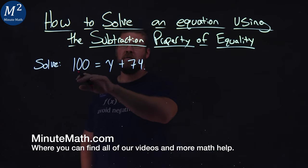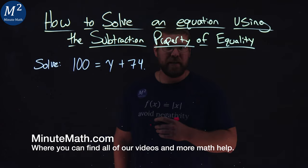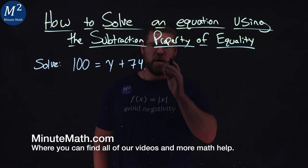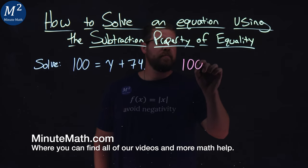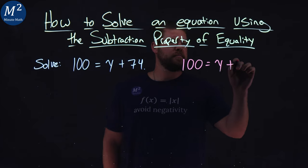We're given this problem here. We want to solve 100 equals y plus 74. Well, first I'm going to rewrite this problem. 100 equals y plus 74.